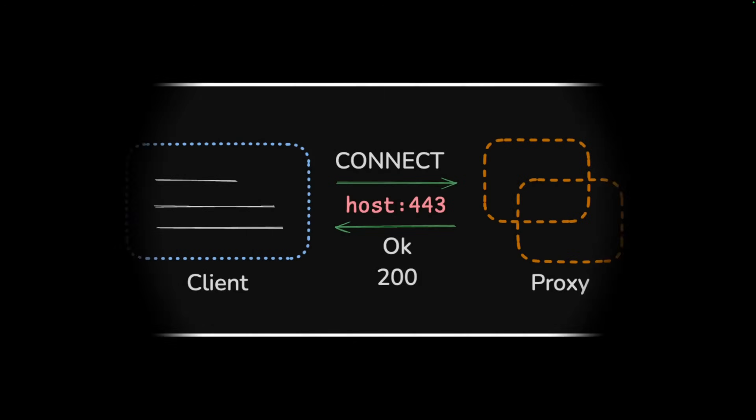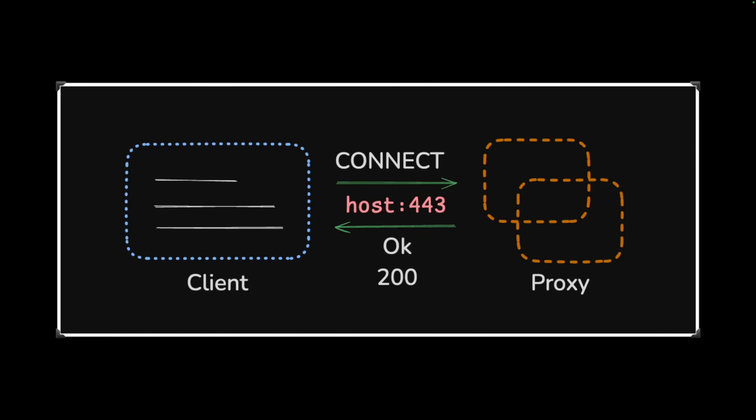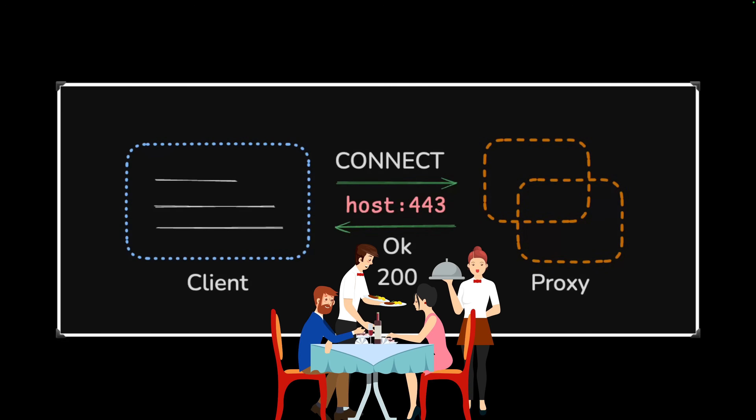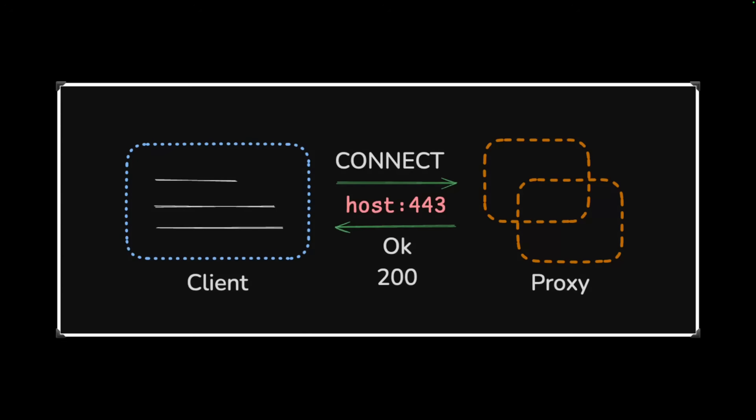CONNECT establishes a tunnel for secure communication — for example, HTTPS via a proxy. The analogy: you and your partner are at a public restaurant but you want privacy, so you ask the manager for a private room where you can talk quietly with confidentiality. That's what CONNECT does — it establishes a secure tunnel between a client and server for any kind of secure communication.